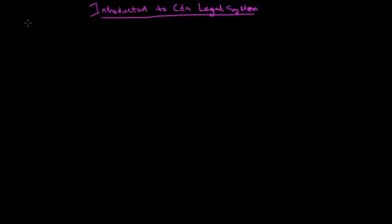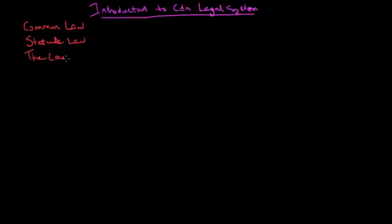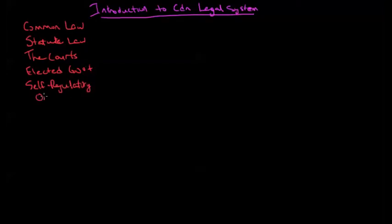We're going to break this down into five elements. We'll briefly discuss common law, look at statute law and where it comes from, look at the role of the courts, look at the role of our elected government, and look at the role of self-regulatory organizations or SROs. These self-regulatory organizations fill a fairly important role in the financial services sector in Canada.